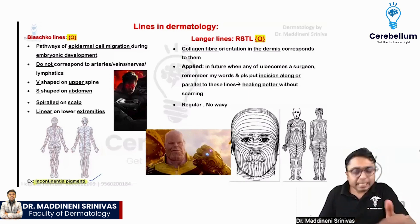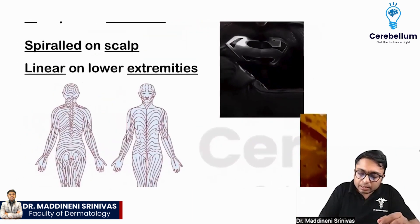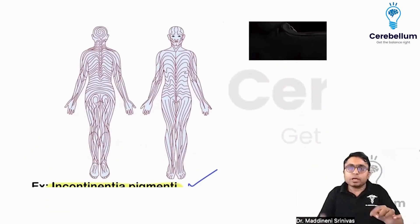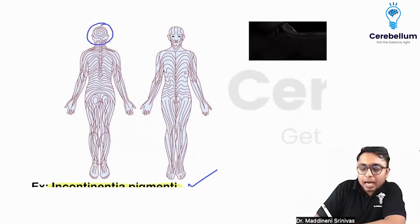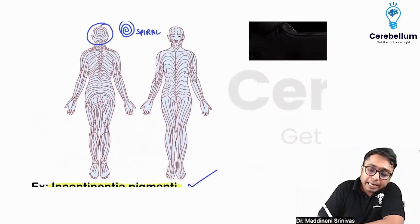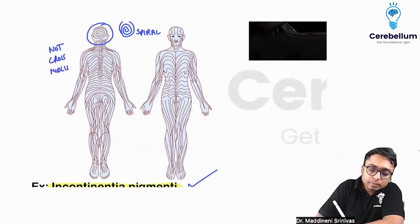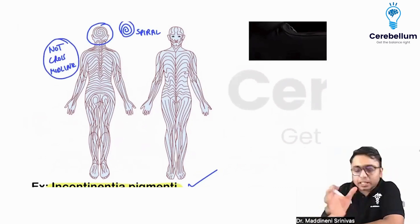If you look at this picture, there are certain characteristics with which you can identify Blashko's lines. On the scalp, they are spiral. They are spiral. And these lines do not cross the midline — they do not cross the midline. Because they are not crossing the midline, certain characteristic shapes will develop.